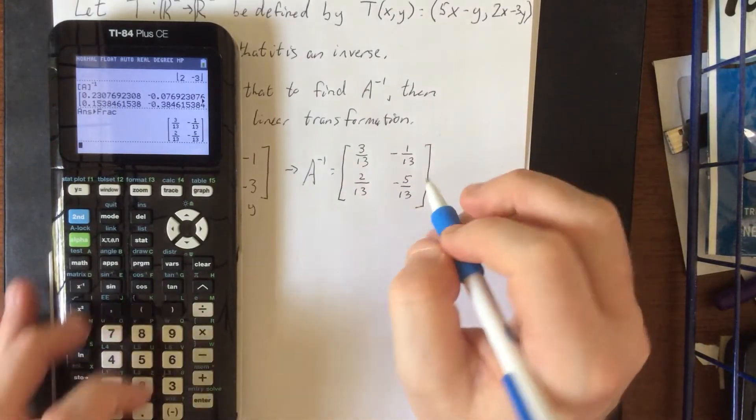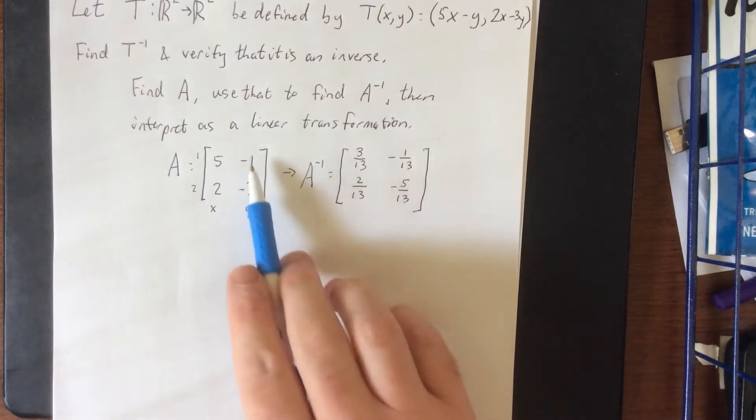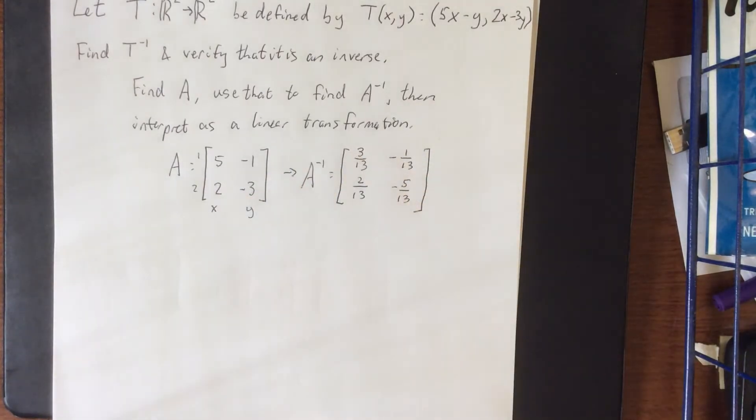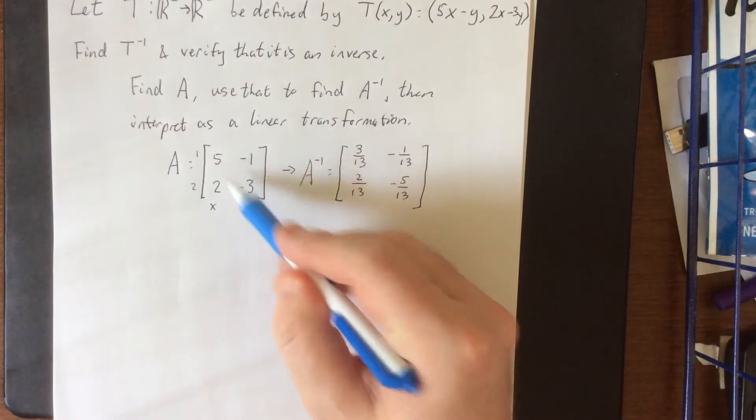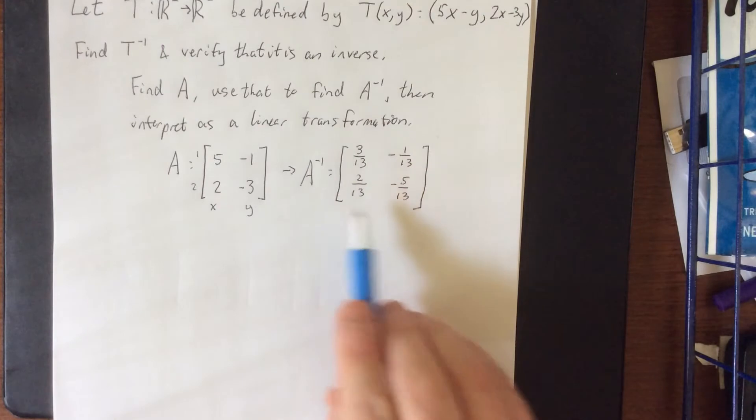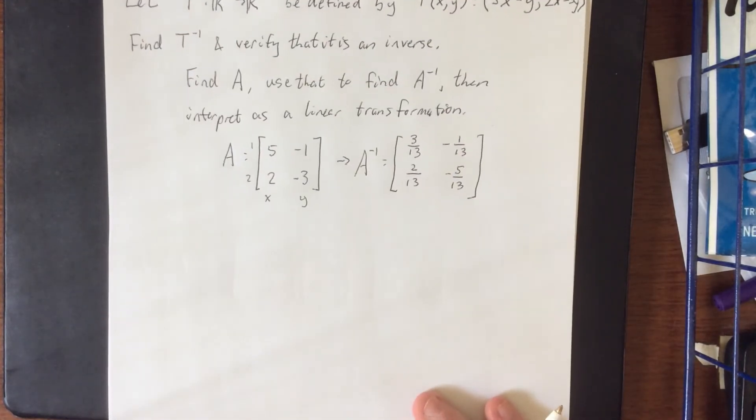A couple things to point out about this: all of the numerators are the same numbers that we saw from the original matrix, the 5 and 5 and negative 1 and negative 1 and 2 and 2 and 3 and 3. Also if we take the determinant of this matrix, we'll see really quickly that it's equal to negative 13, which is why we see a bunch of 13s in the denominators. That can come from the adjoint method.